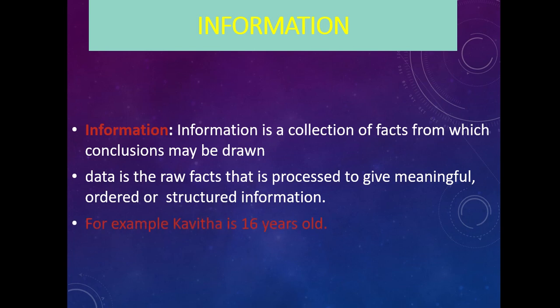For example, Kavitha is 16 years old. When I say the name Kavitha and age 16 separately, there is no meaning. But when I combine these data together and perform an operation, it gives meaning. Another example: I am collecting your marks. All your marks are called data. When I connect your five subject marks, it is only data — nothing has been done on it, no meaning at all. But when I perform addition on your marks and find the total of five subjects, the total gives you meaning. The total is called information. The collection of marks is the input, performing the addition is the process, and the final total is the information.